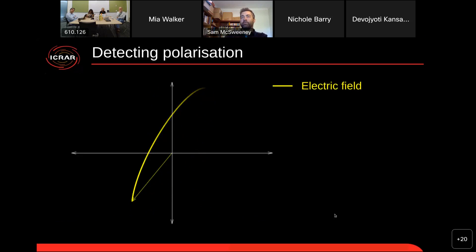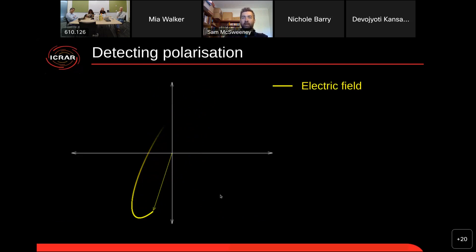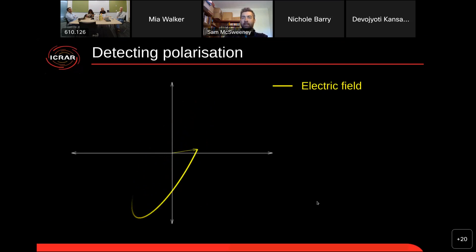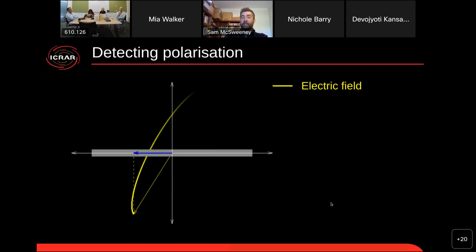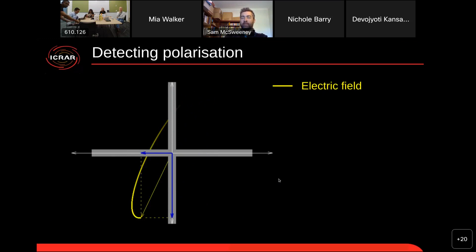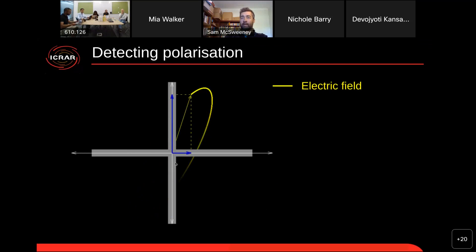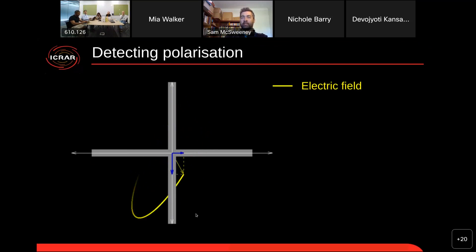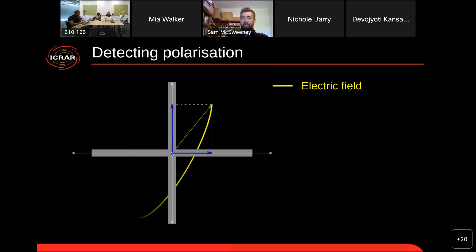So given that we care about polarization, what does it take to get a full measurement of the polarization state of a source? Going back to the monochromatic case — a single frequency where the light is always 100% polarized — if you have a dipole antenna positioned horizontally, the incident electric field generates a voltage across the dipole proportional to the component of the incident field projected onto that dipole. If you have a second dipole oriented vertically, you can sample both the horizontal and vertical components of the electric field. As long as you keep track of the relative phase offset between the voltage response of the two dipoles, you can perfectly reconstruct the incident electric field.